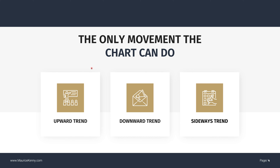Let's break down what the market can actually do. The market can only do three things: it can either go up, down, or sideways. It can't do anything else — it's not 3D, it can only go up, down, or sideways. The problem is that you just don't know how to identify it, so let's talk about how to identify it.